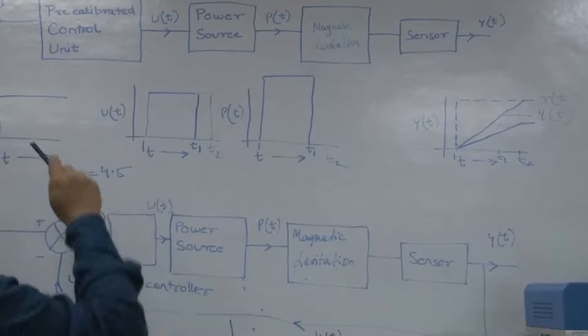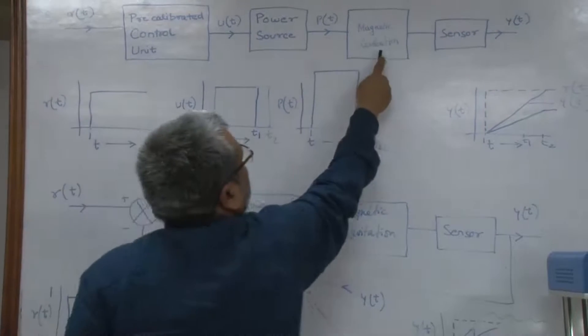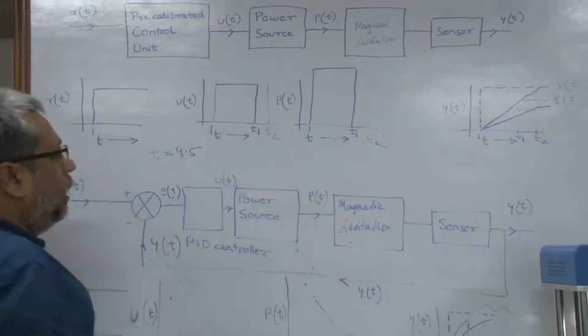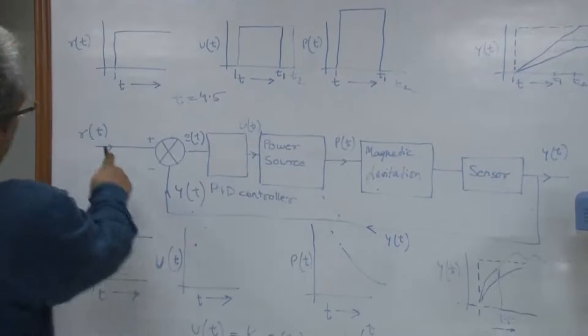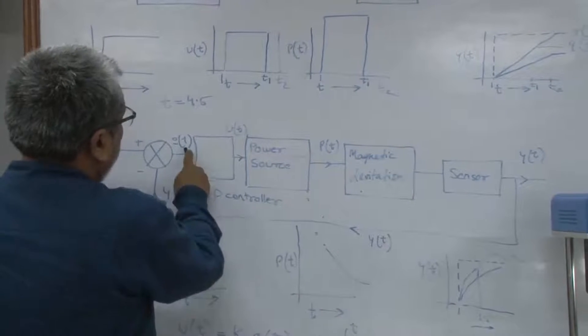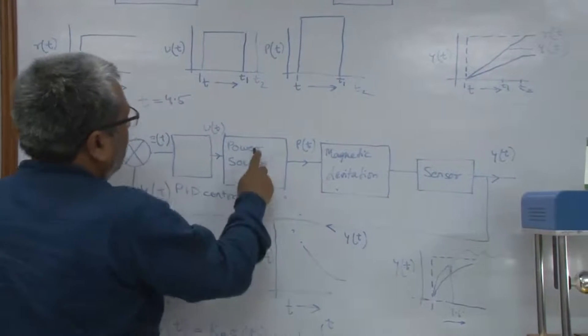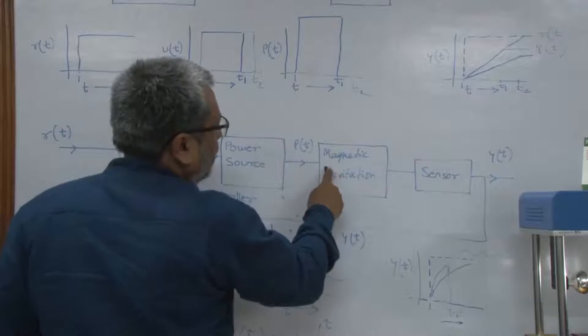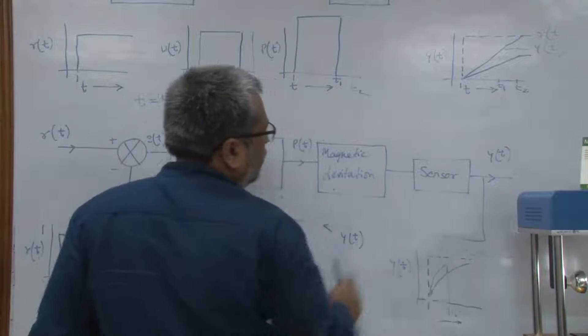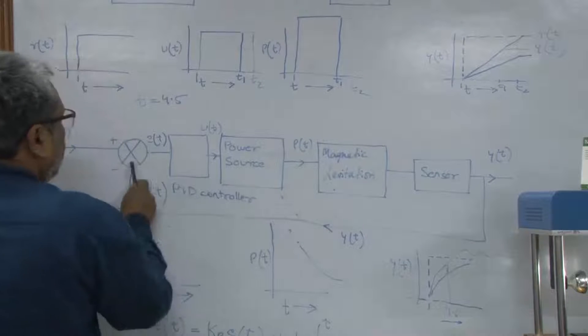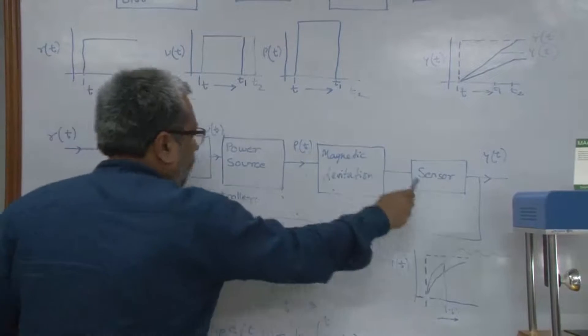Whereas if you look at the closed loop system here, you have a reference position, and then there is an error, and then there is a controller here like a PID controller. Then the power source and the magnetic levitation, that is the plant, and then there is a sensor which is sensing the location and it is getting a feedback through a PID controller. And this whole system can actually rectify itself.